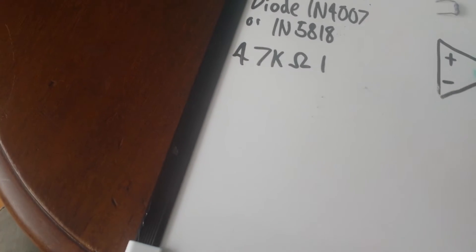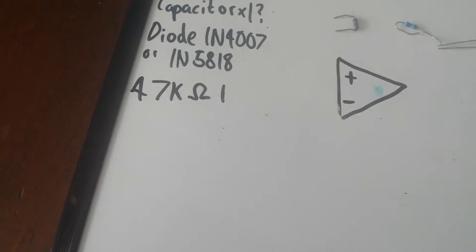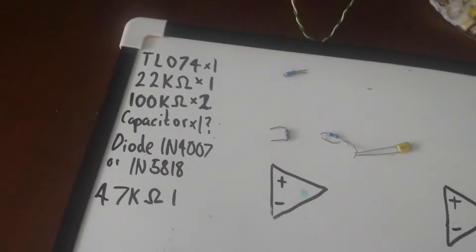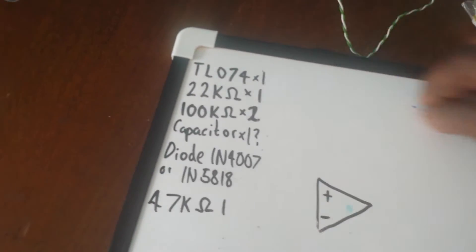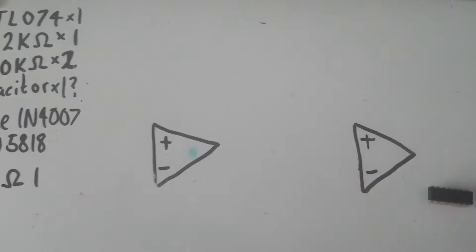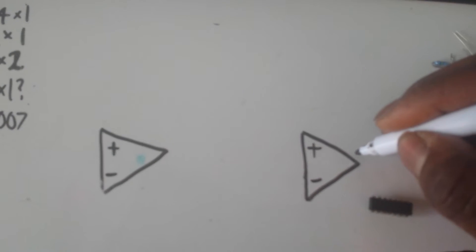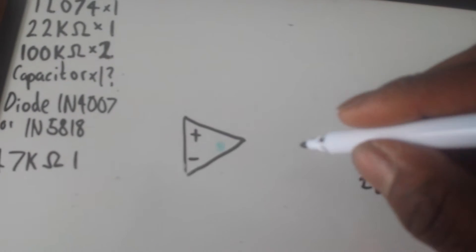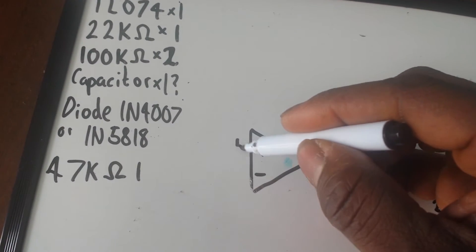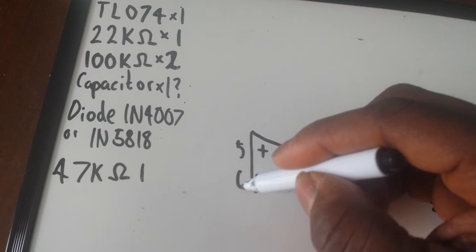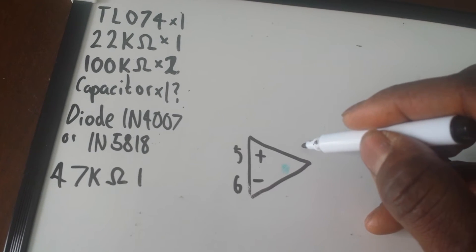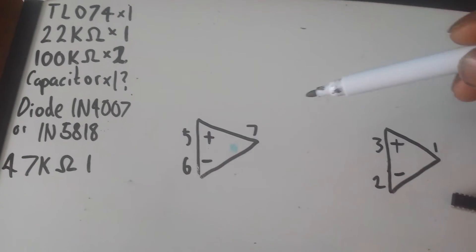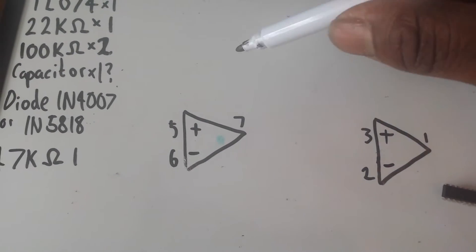What I'm going to do is quickly draw you how we connect all these parts together. First of all, we're in our quad op-amps. I'm going to call this pin 1, pin 3, and this will be pin 2. This will be pin 5, pin 6, and pin 7. Pin 1 and pin 2 are the output pins.